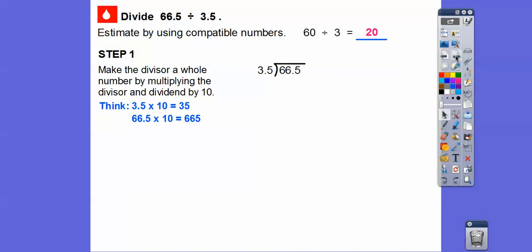Let's make the divisor a whole number. Here's the divisor right here, and this is the dividend right here. To make this a whole number, we'll multiply this by 10 because 3.5 times 10 moves the decimal one place to the right, so it becomes 35. And similarly, 66.5 times 10 moves the decimal to the right one place and it gets us 665. Now we're dividing 35 into 665.